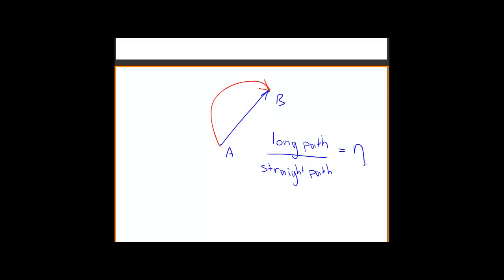This number eta is a fundamental number to describe the differences in path length. Every curve that goes from A to B would have a number like eta to describe how many times longer it is than the shortest possible distance between A and B. So this number eta is highlighting that there is a fundamental constant that goes with every curve, and the one that goes with a circle is eta.